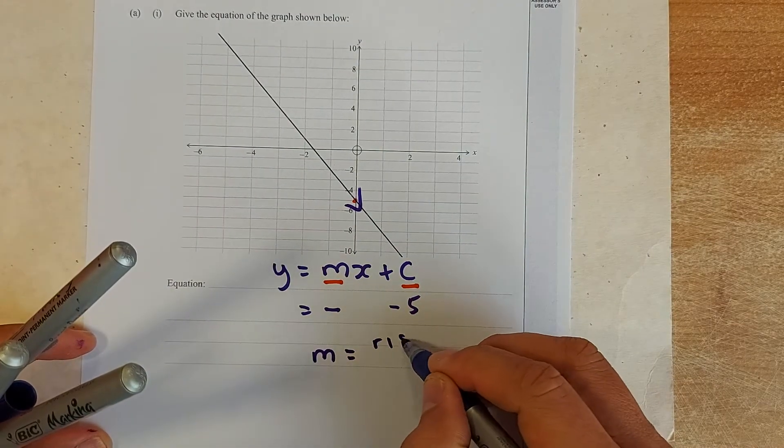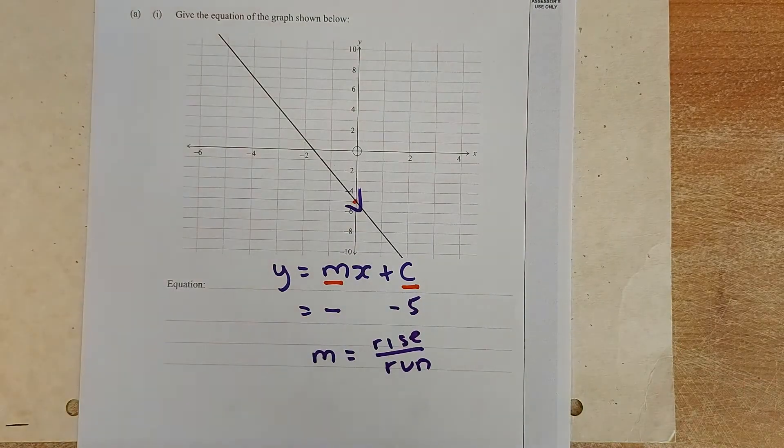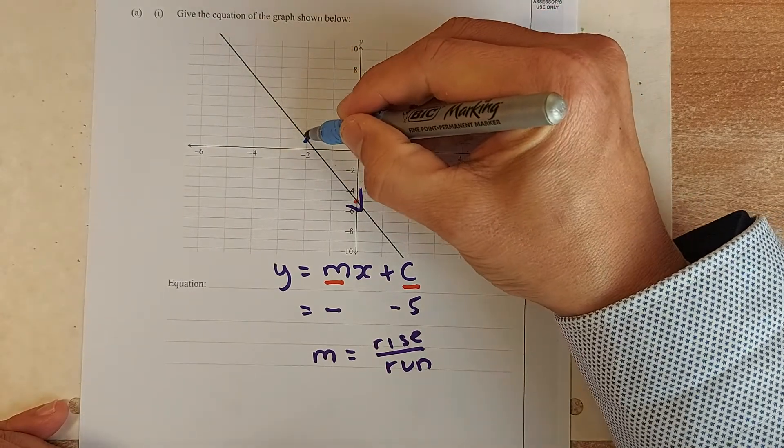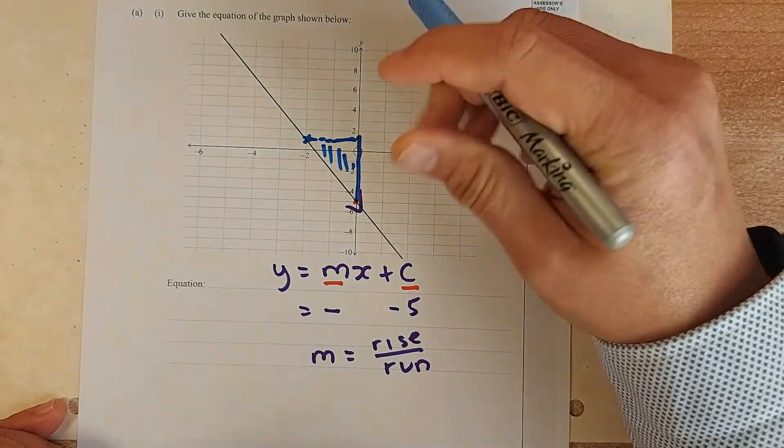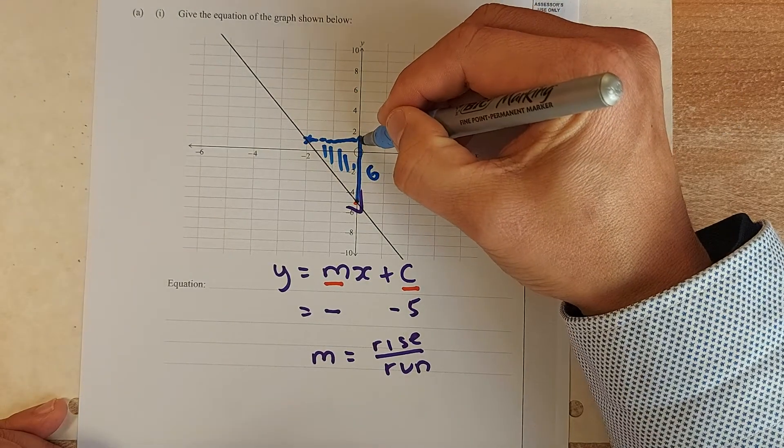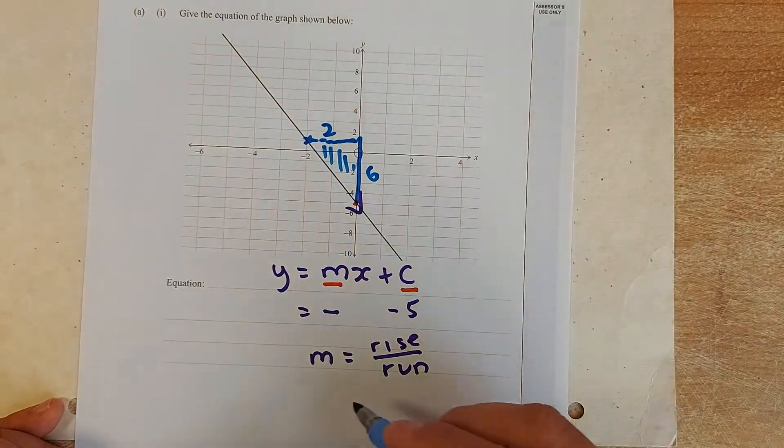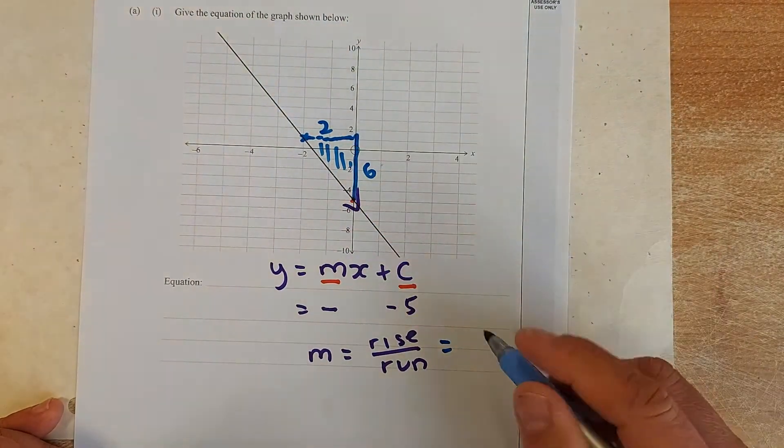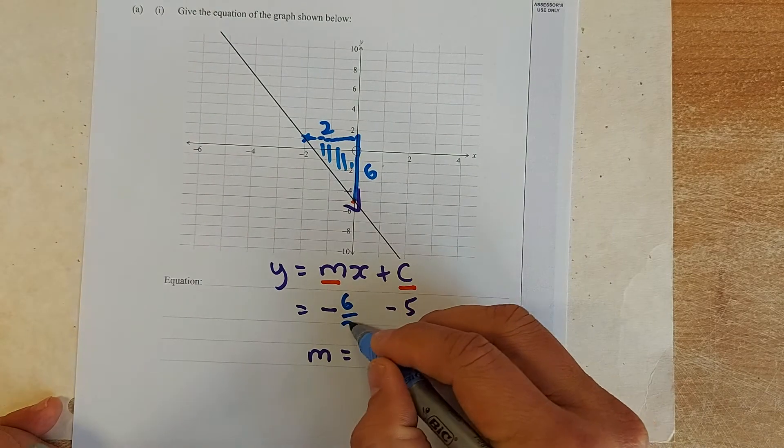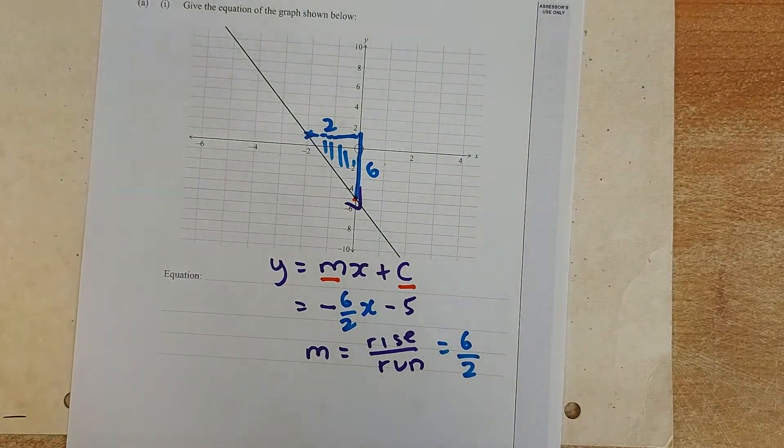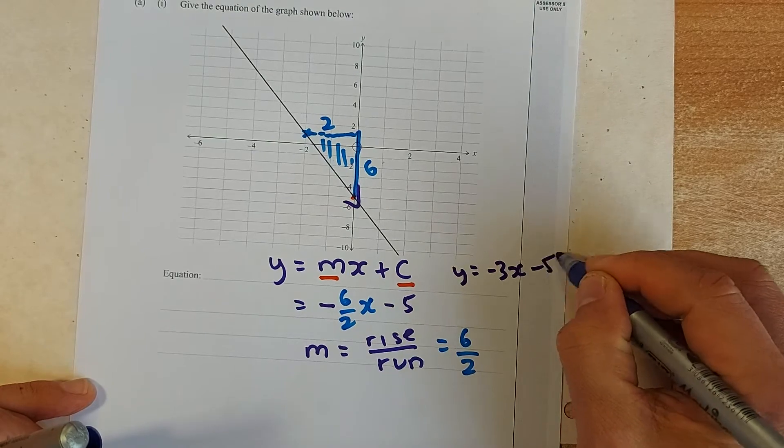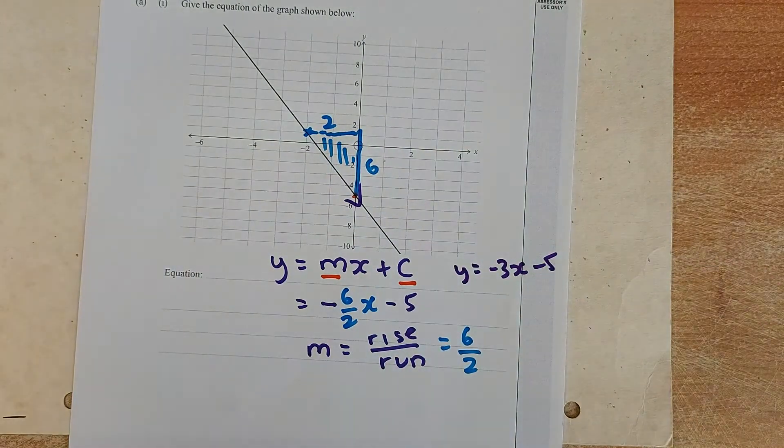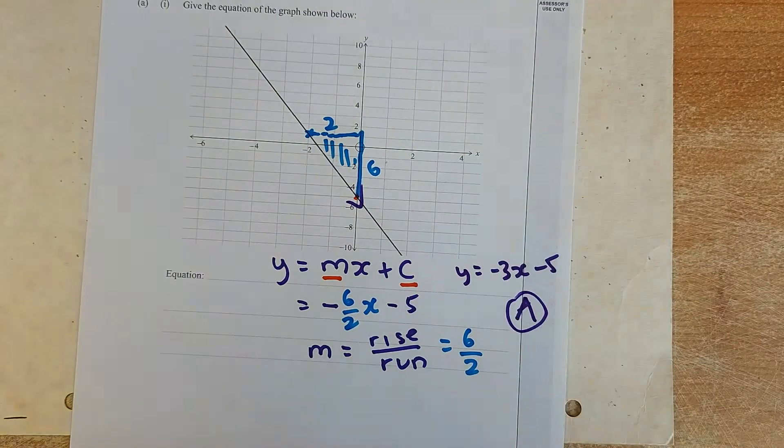Gradient is rise over run. So you need to find a triangle. You can do a triangle as usual but unfortunately this point is not a whole number so we are going to get this point. So we are going to draw a triangle and calculate the rise over the run. So the rise from minus 5 to 1 is going to be 6, and the run from 0 to negative 2 is 2. So the rise over run is going to be 6 over 2. So the answer is going to be 6 over 2x minus 5. If you want to simplify it's the same thing, y equals to negative 3x minus 5, and that's going to achieve.